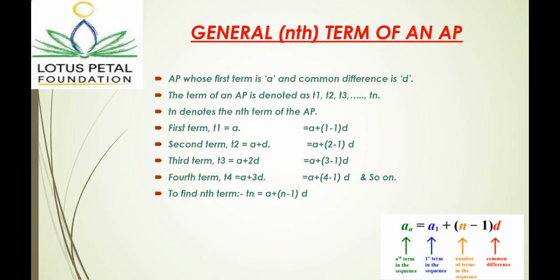General nth term of an AP. AP whose first term is a and common difference is d. The term of an AP is denoted by first term, second term, third term and nth term. Tn denotes the nth term of the AP.